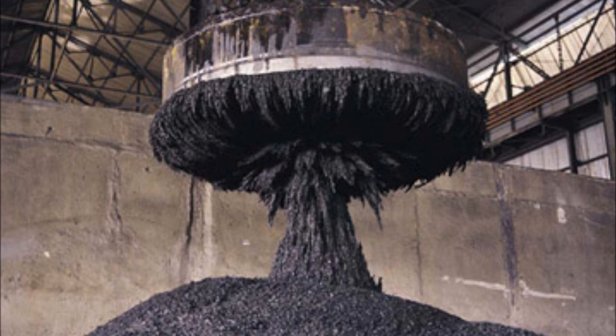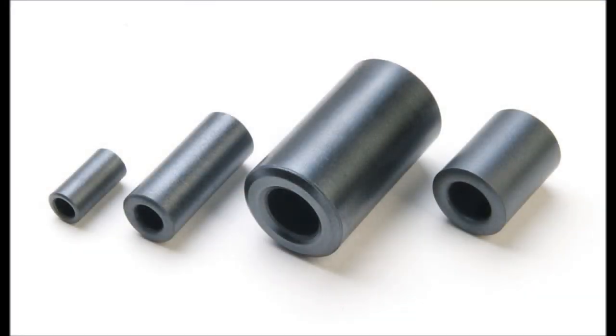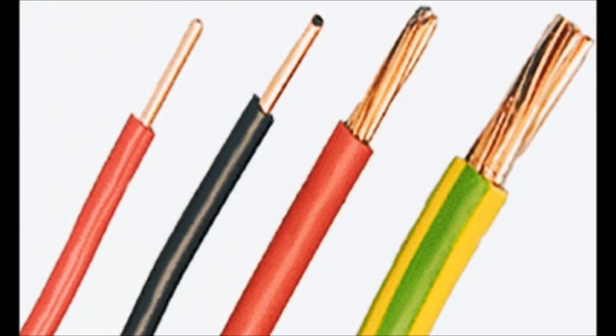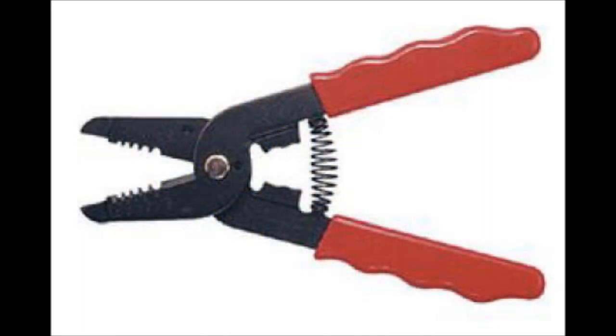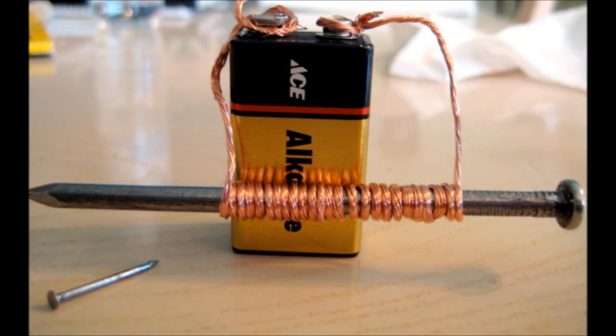Creating an electromagnet is relatively simple because you only need a few materials. These materials include a metal core, some insulated copper wire, and some batteries. You also want a pair of wire cutters so that you can strip about an inch of the insulation off of the copper wires so that you can connect it to your battery and power source.